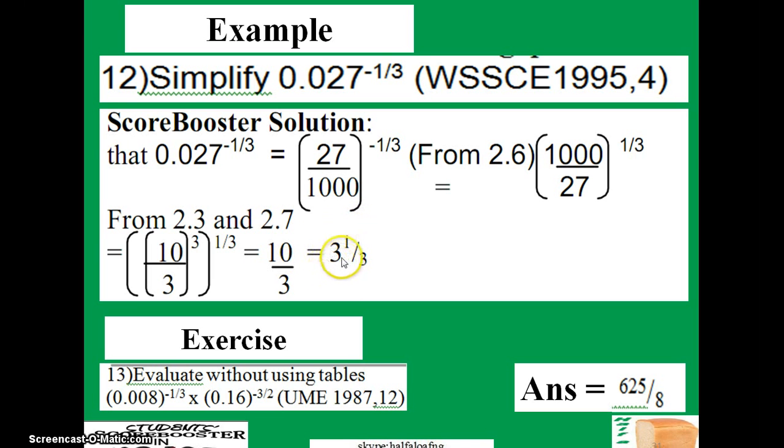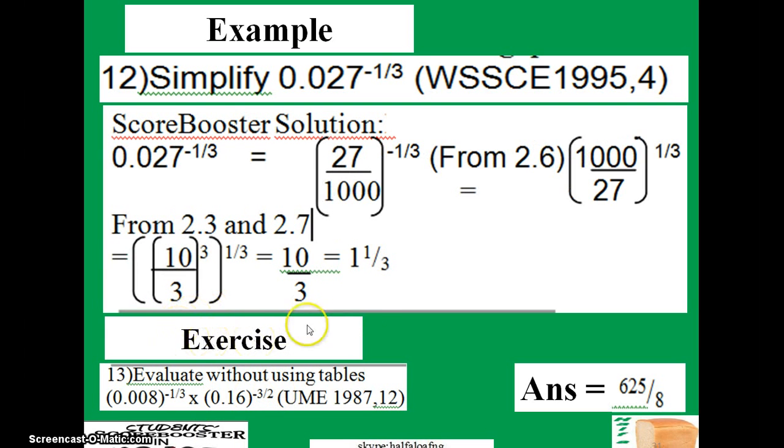If you simplify this further, you're going to have 3 and one-third. So that is all about this question. You could use the same step as highlighted here to solve this exercise. This is UME question number 12. Just try it, and the answer is 625 over 8.